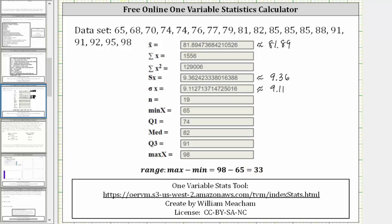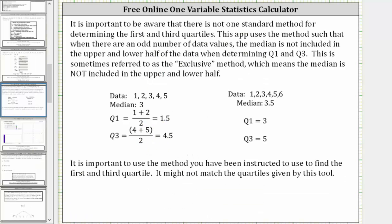Now, before we go, I do want to talk about quartile one and quartile three. It is important to be aware that there is not one standard method for determining the first and third quartiles. This app uses the method such that when there are an odd number of data values, the median is not included in the upper and lower half of the data when determining Q1 and Q3.